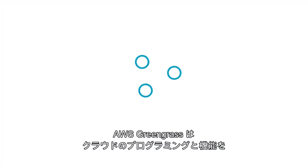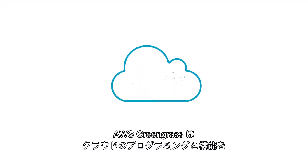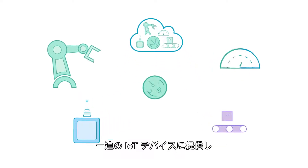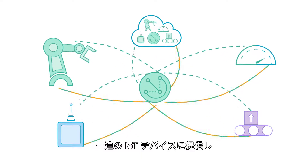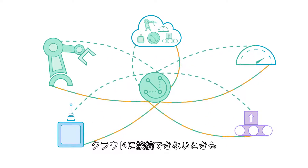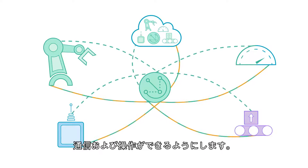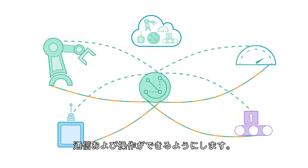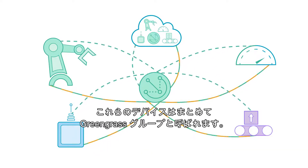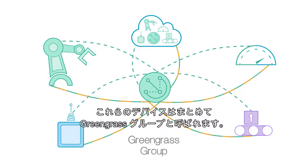AWS Greengrass brings cloud programming and functionality to sets of IoT devices, empowering them to communicate and react when a cloud connection is not possible. These devices together are known as a Greengrass group.